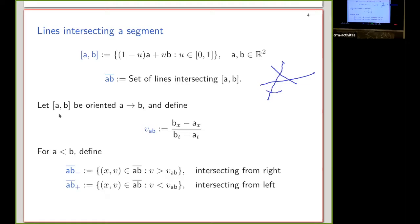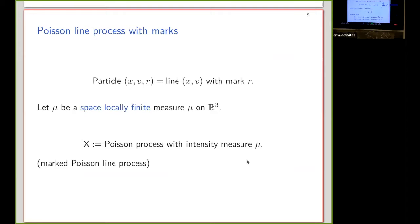Now suppose that this segment is oriented — I put an orientation in this direction — and define the speed (in quotation marks) of the segment, and then define the lines crossing from right to left and from left to right, calling them AB-minus and AB-plus. These are sets of lines: all lines crossing in one sense and in the other.